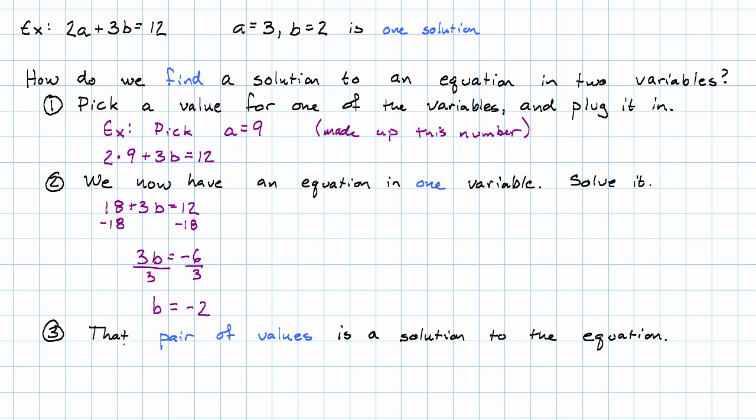So in our example above, the pair a equals 9 and b equals negative 2 is a solution to the equation 2a plus 3b equals 12.